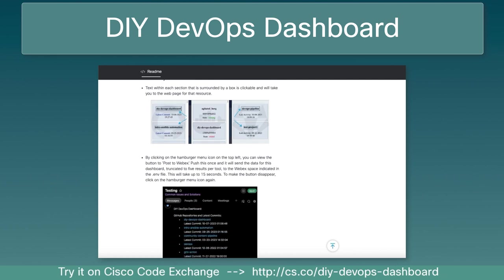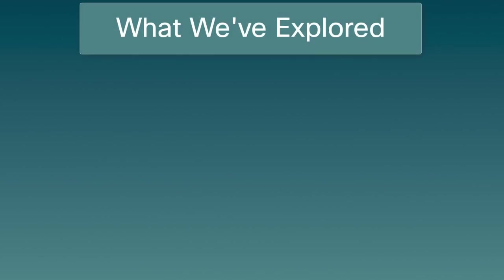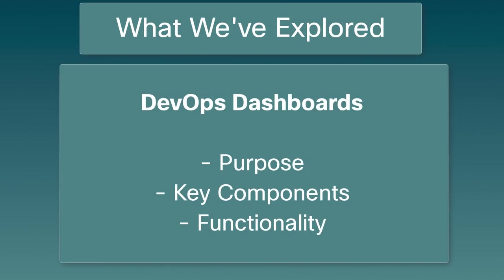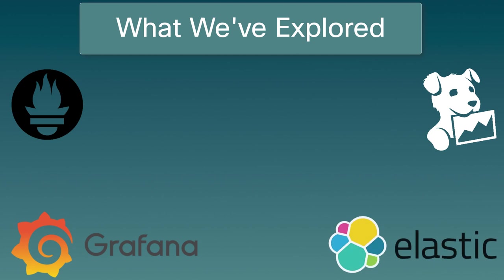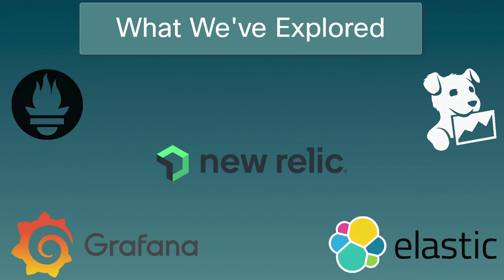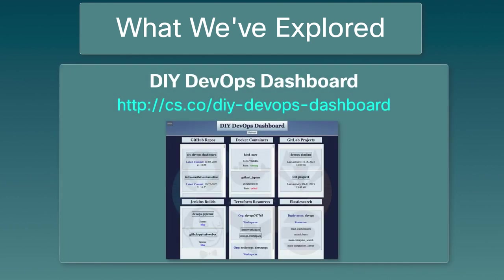In this video, we have explored DevOps dashboards and their purpose, key components, and functionalities. We've also discussed five popular DevOps dashboards including Grafana, Prometheus, Datadog, Elastic Stack, and New Relic, highlighting their main features, advantages, and disadvantages. We've discussed key considerations for choosing a suitable DevOps dashboard, and introduced a DIY DevOps dashboard as a tool for DevOps learners to organize and visualize essential DevOps technologies.